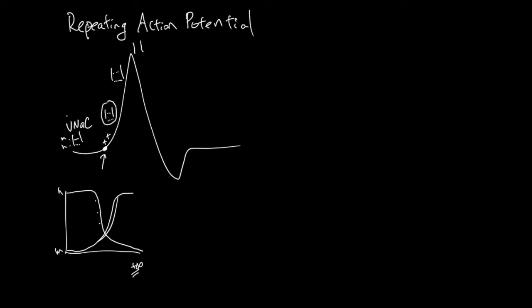At the peak, the M is most open and H is now finally caught up and closed. From here, there's no Na flow. And this no Na flow will continue until around here because this is where the H will open up again.